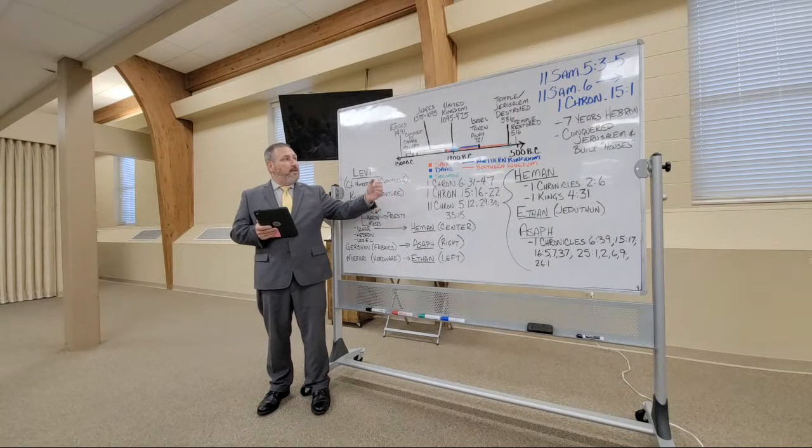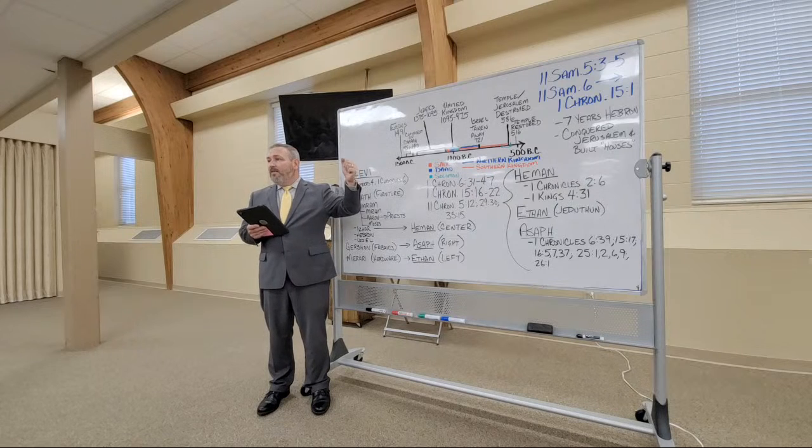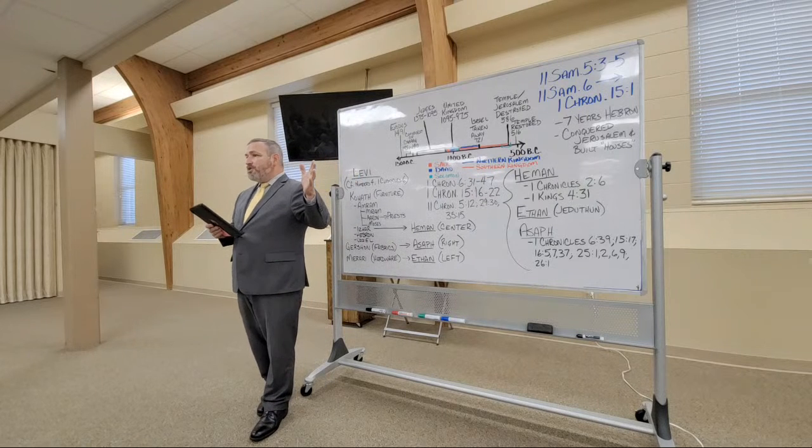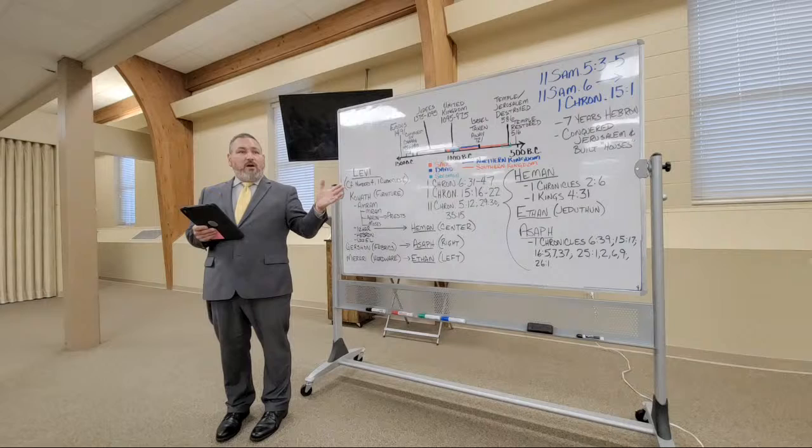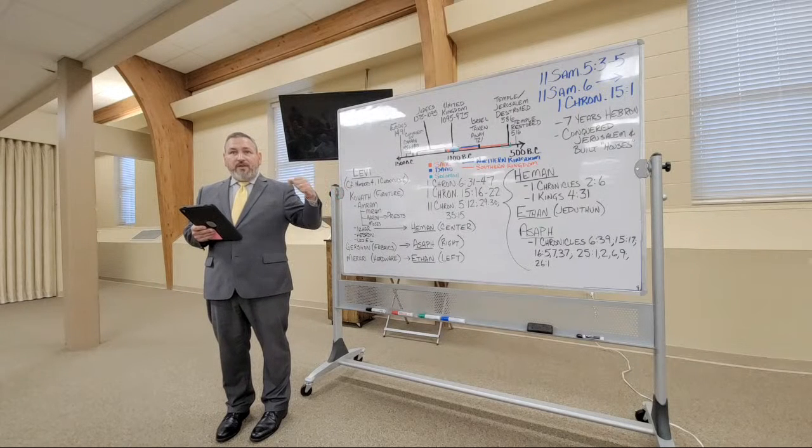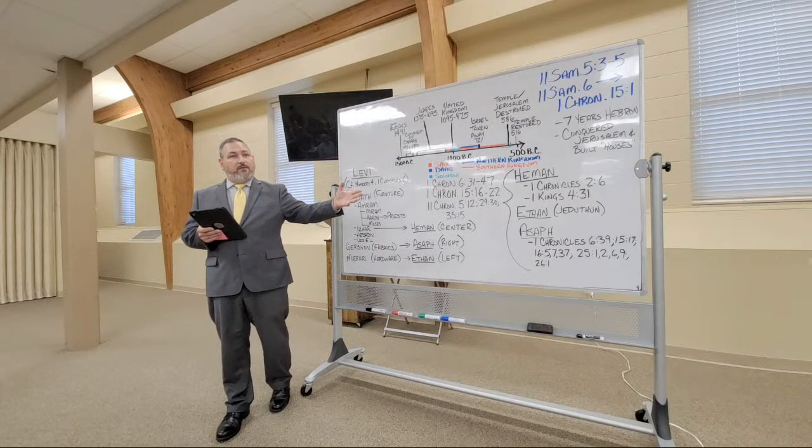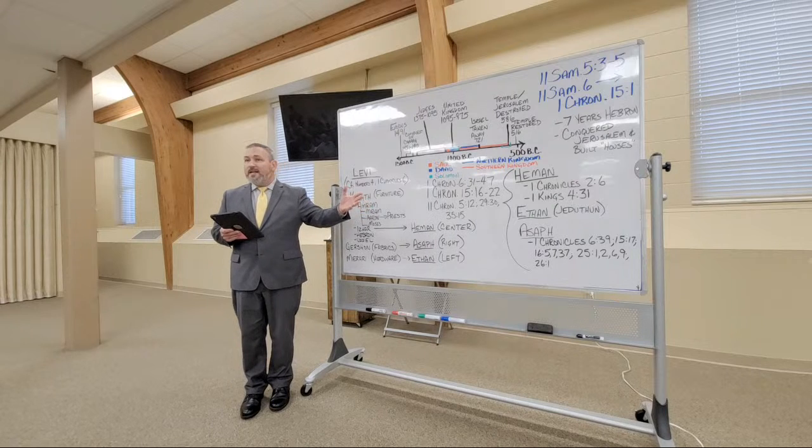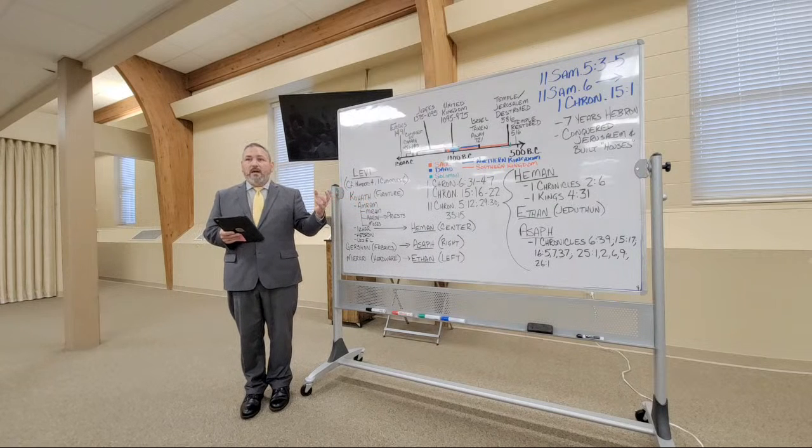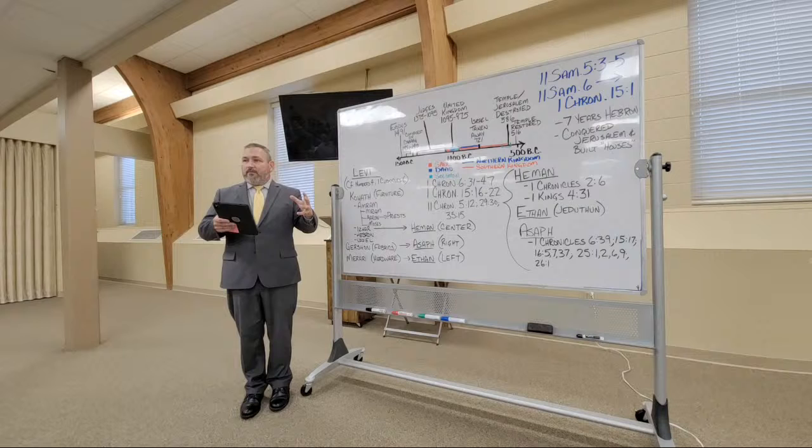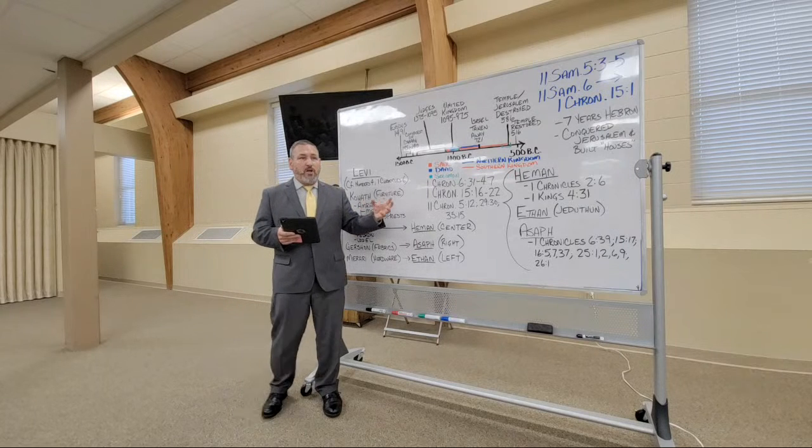And we also learn in 2 Samuel 5 that the first seven years of David's reign he reigned from the town of Hebron. And then the remaining 33 years of his reign was in Jerusalem. Now that's important in giving us a little bit of temporal and geographical context of what we're going to look at.